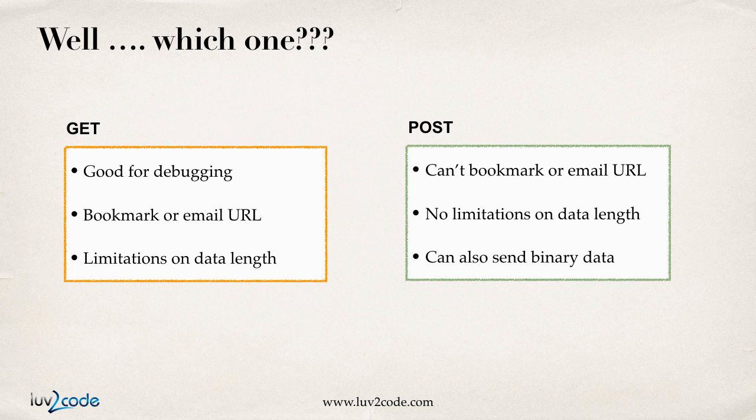With the POST method, you can't really bookmark or email the URL, because the URL doesn't contain the data — the name-value pairs are sent in the body of the request message. But a really nice thing about the POST method is that there's no limitation on data length. So if you have a very large form with a lot of fields, you can send as much data as you want. Also, the POST method is very good for sending binary data — for example, if you have an email program with a form attachment, you can attach a binary file to the form and then submit it.